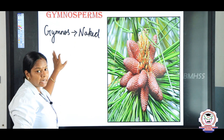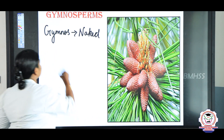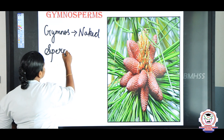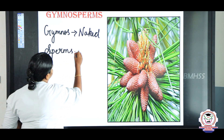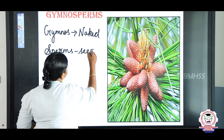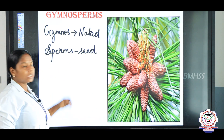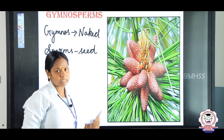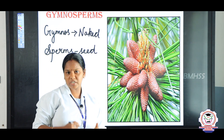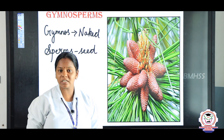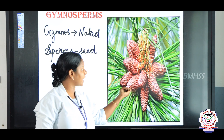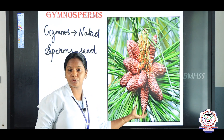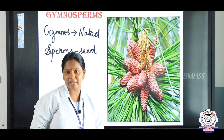But in the gymnosperms, the seeds are naked, and 'sperms' in Greek means seed. So the word 'gymnosperms' means naked seeds, and in this session we are going to study about the plants which produce naked seeds. For example, Casuarina — Savukumaram we say in Tamil — they also possess naked seeds which we can see through our normal eyes.